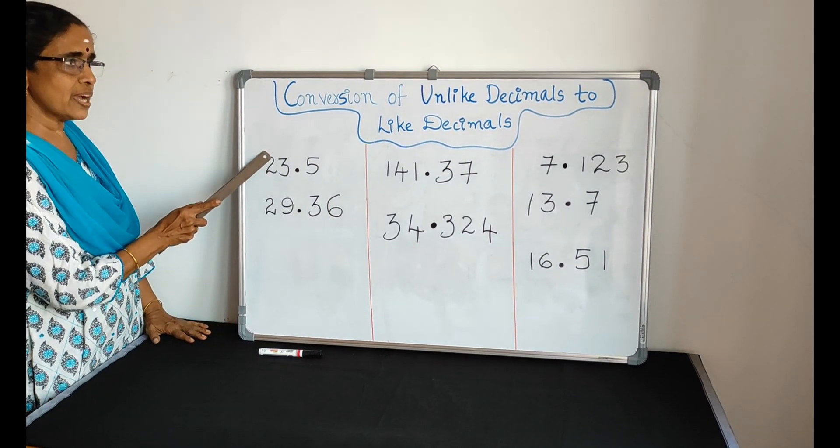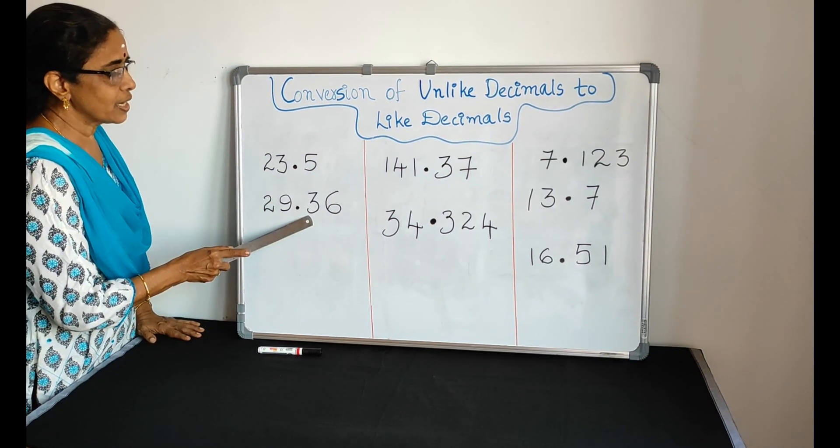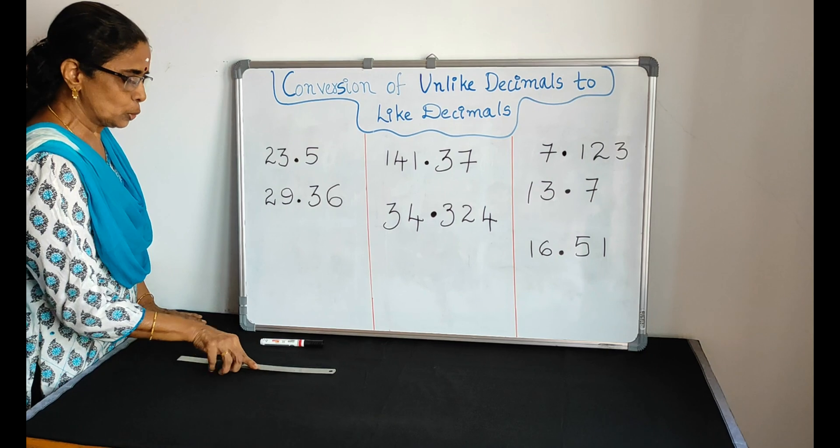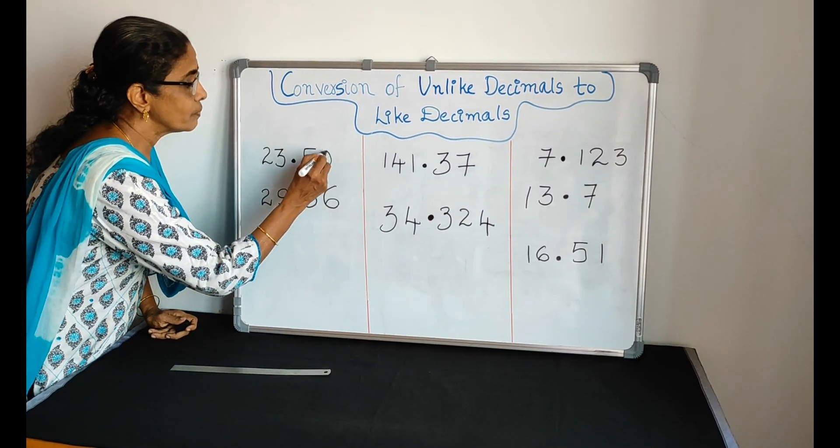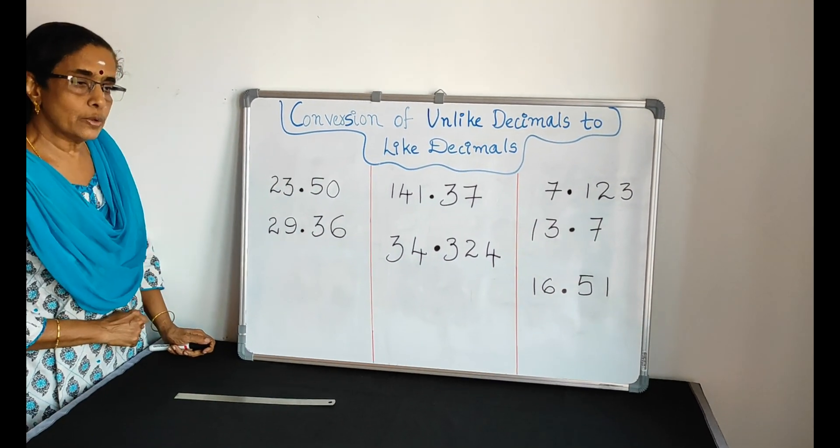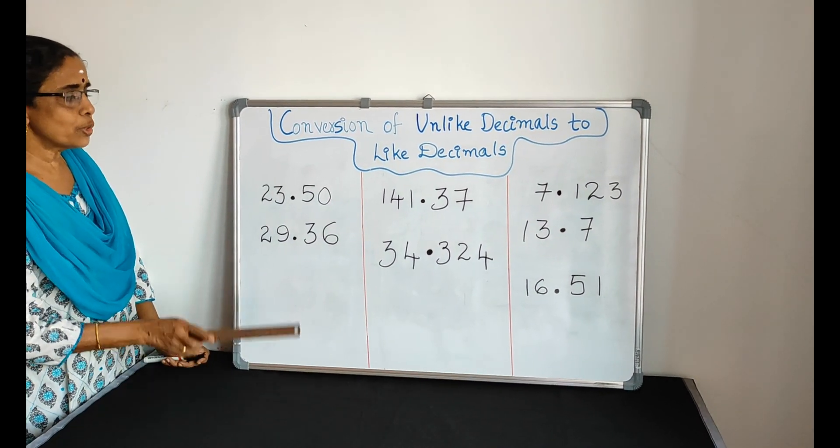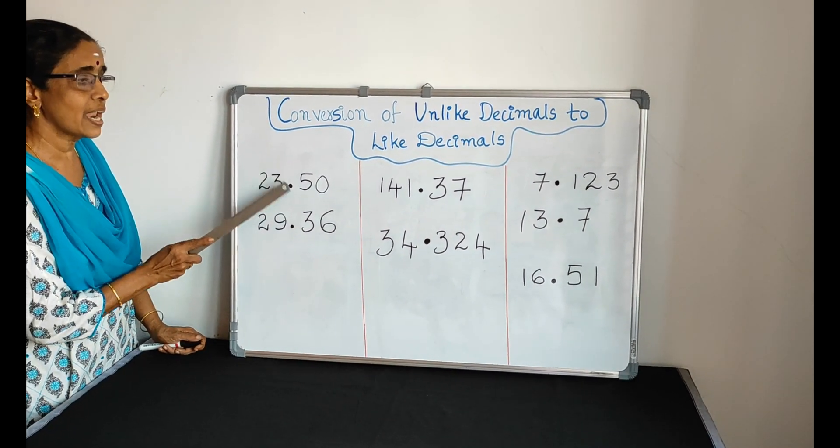We are asked to make them like decimals. Very simple. Here we have two digits. Here also, make it two by adding a zero like this. Adding a zero doesn't change the value. Now, 23.50 and 29.36 are like decimals.